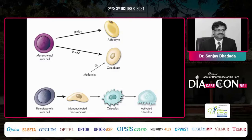Metformin actually stimulates osteoblast formation by increasing the activity of RUNX2, while PPARγ — mainly activated by thiazolidinediones — stimulates the conversion of mesenchymal stem cells into adipocytes rather than osteoblasts. Because of this adipocyte conversion instead of osteoblast formation, patients treated with thiazolidinediones have poorer bone health.